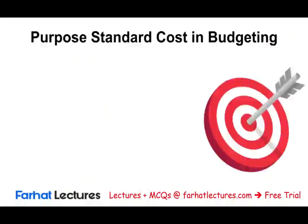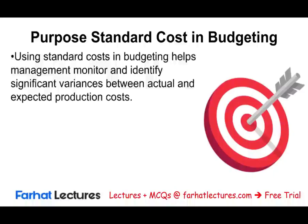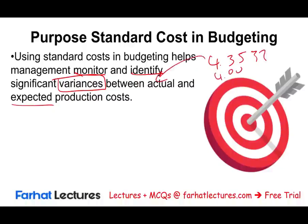The purpose of standard costing and budgeting is to determine what something should cost us, but it also serves another purpose. Using standard costs and budgeting helps management monitor and identify variances. Variances are the difference between what you planned — what you think something should cost — and what it actually costs. Remember, the pizza is expected to cost $4.35. How much did it actually cost? It could have cost us $4, or it could have cost us $5. That difference is a variance.